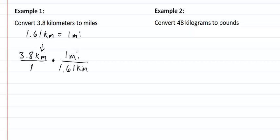So kilometers over kilometers is gone. So we are going to take three point eight, and we are going to be dividing because our unit is in the denominator, so we will divide by one point six one. We put that into our calculator, and I get that we have two point three six. We are going to round to the nearest hundredth here, and that will be miles.